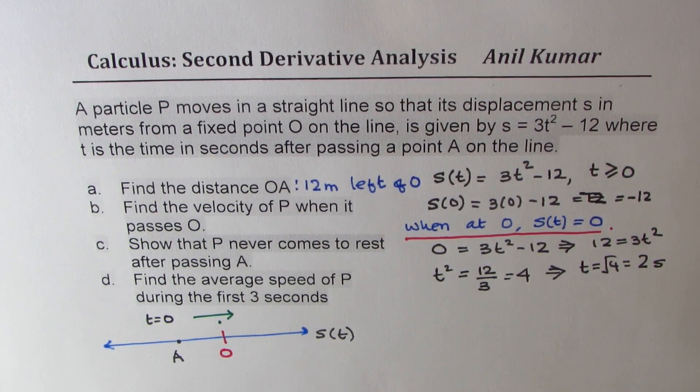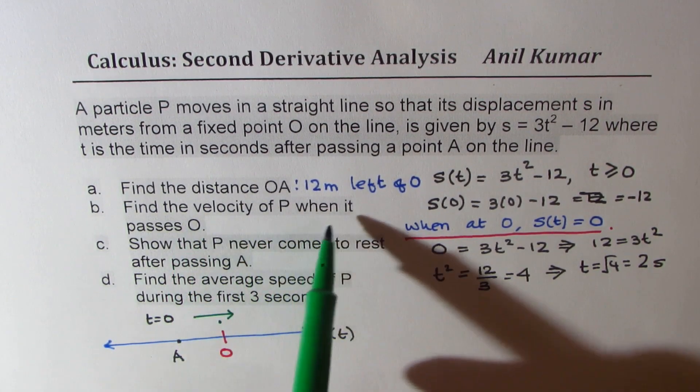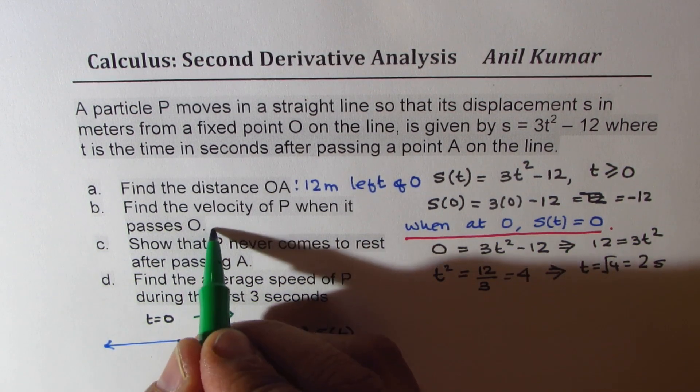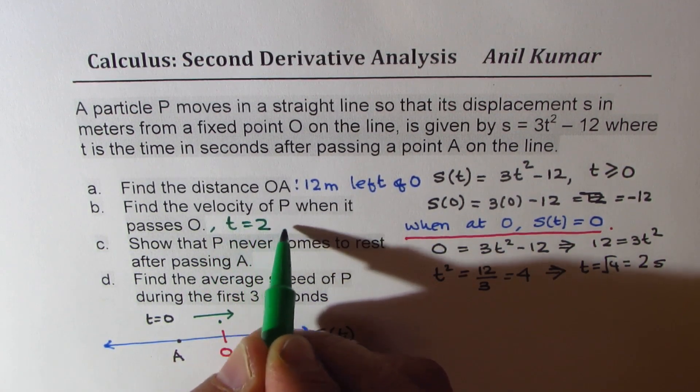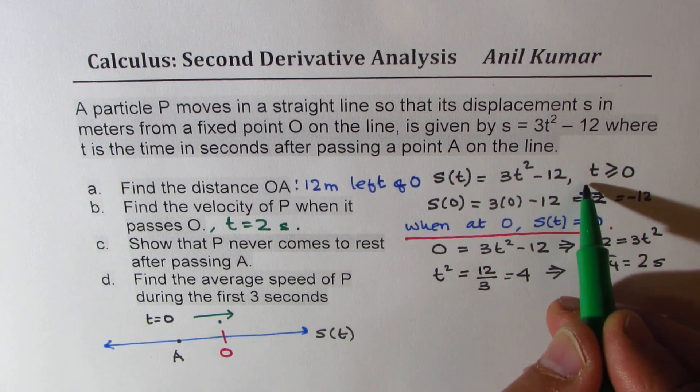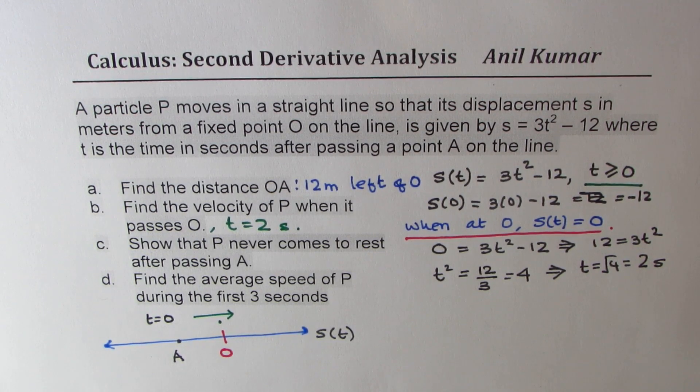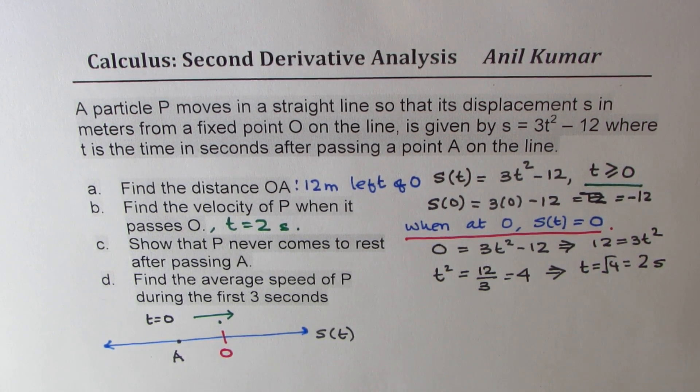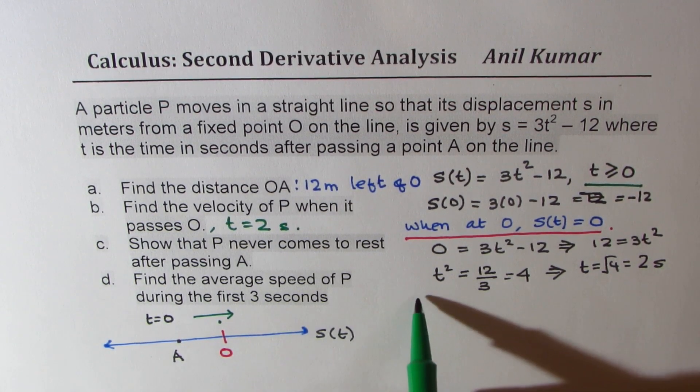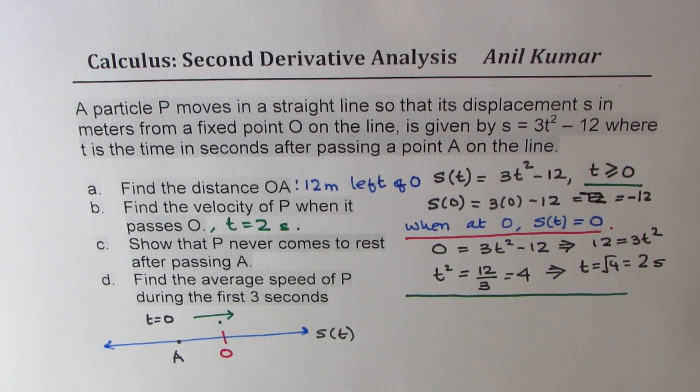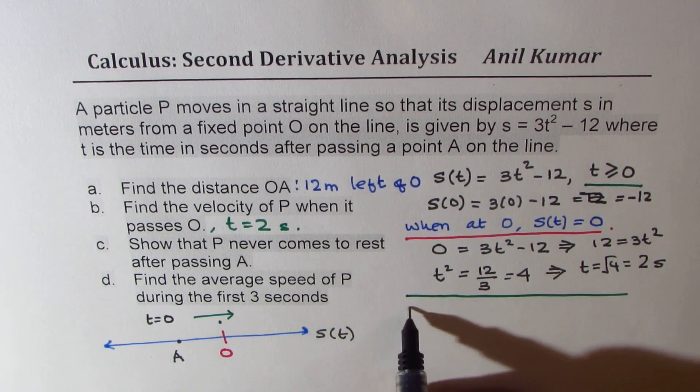So basically, we need to find the velocity of particle when it passes through O. And at this time, T is equal to 2 seconds. We have to take T always positive. I am not considering negative value since T is after it passes point A. So I hope that part is absolutely clear. Now since we need to find the velocity, what should I do? I know the displacement function, so I will find its derivative.